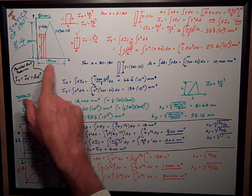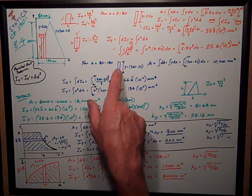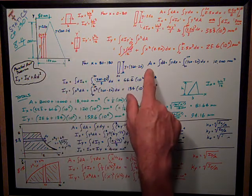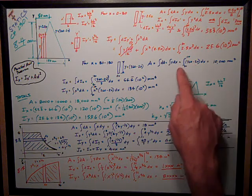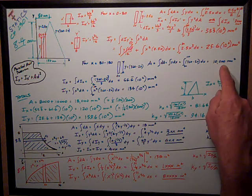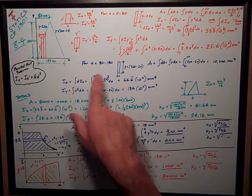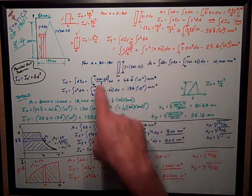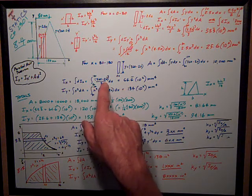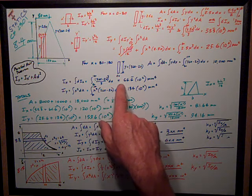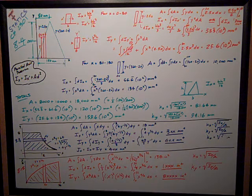Now I need to go from x = 80 to x = 180. Using the same little strip, dx by y tall, where y = 360 − 2x. The area is the integral from 80 to 180 of (360 − 2x) dx, giving 10,000 mm². Similarly, Ix is the integral of dIx = (360 − 2x)³/3 dx. Evaluating that — I'd recommend Wolfram Alpha because the cubed term produces many terms — I get 66.6 × 10⁶ mm⁴.